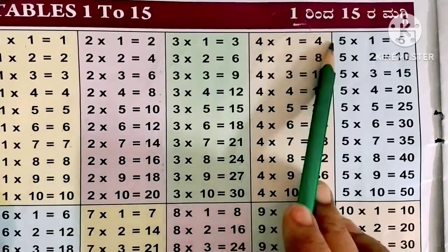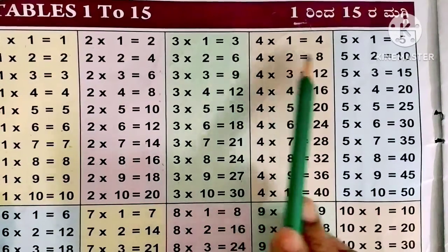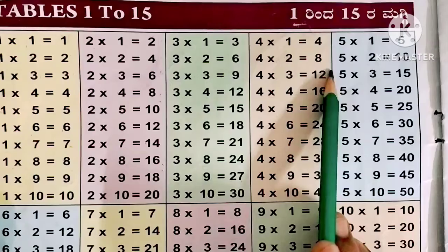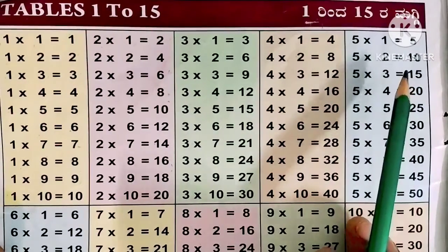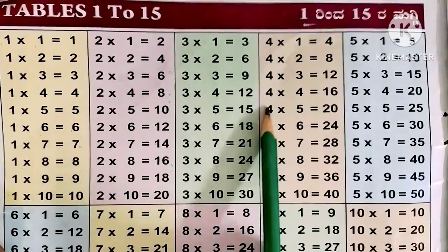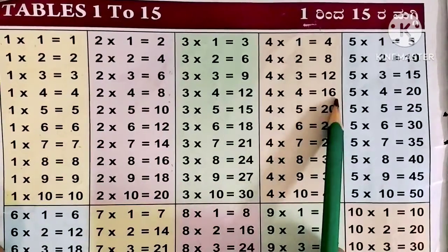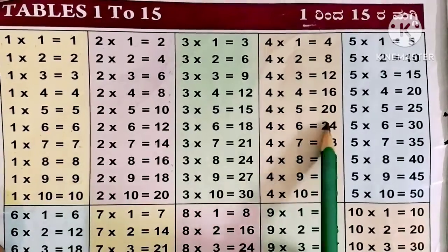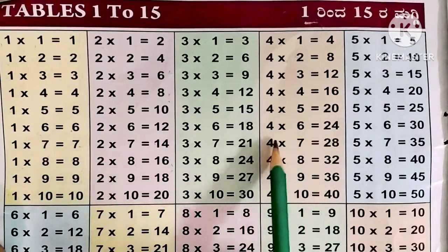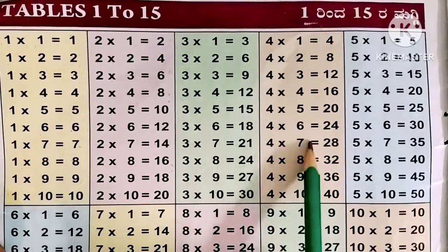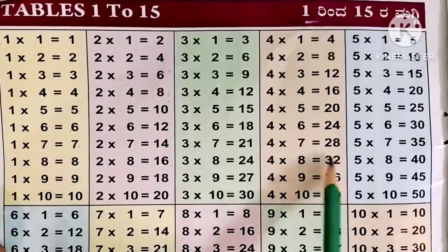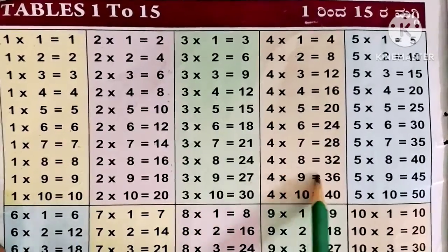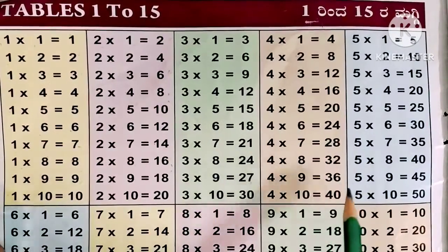Now the 4 times table. 4 ones are 4, 4 twos are 8, 4 threes are 12, 4 fours are 16, 4 fives are 20, 4 sixes are 24, 4 sevens are 28, 4 eights are 32, 4 nines are 36.